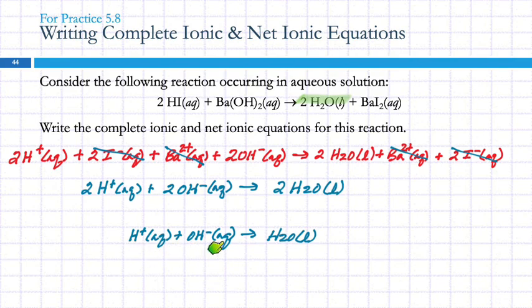The net ionic equation tells us who was changed by the reaction. The spectators, iodide and barium, they were mixing around, but they were not changed in the chemical reaction. Thank you.